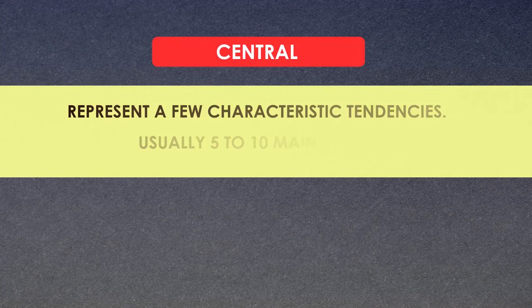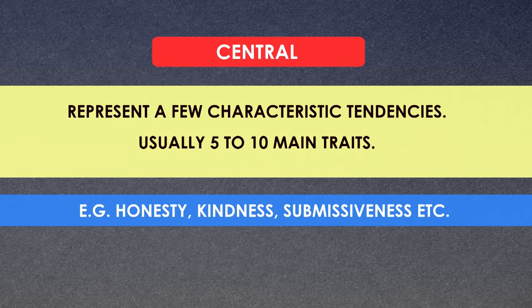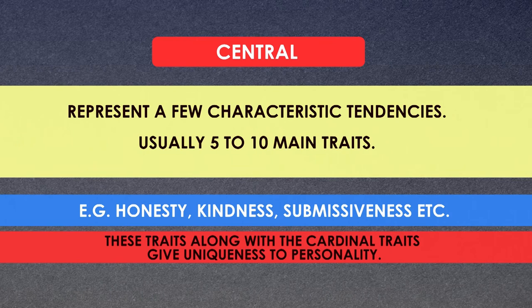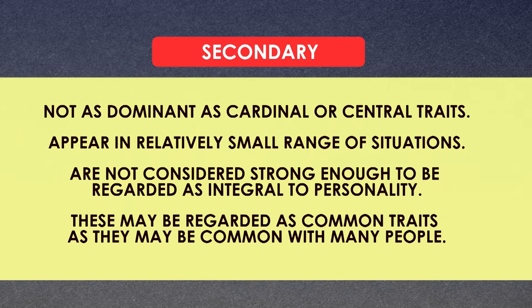Central traits represent a few characteristic tendencies of individuals, usually five to ten in number. For example, honesty, kindness, submissiveness, and so on. These traits, along with cardinal traits, give uniqueness to personality. Secondary traits are not as dominant as cardinal or central traits. They appear in a relatively small number of situations and are not considered strong enough to be regarded as integral to personality. These may be regarded as common traits — common because they may be shared by many people. For example, in normal situations, most people are calm, cooperative, and don't create much fuss.